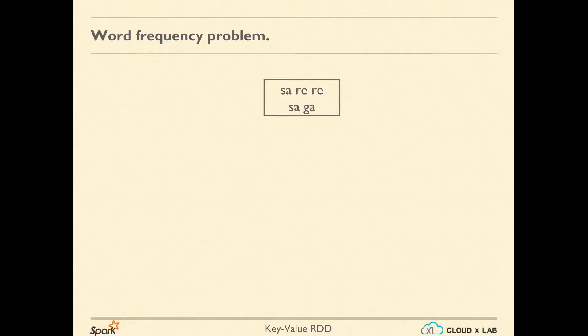Let's take another example. Say we would like to compute the frequencies of words in a huge text file. In other words, the objective is to find unique words in the text and find the frequencies of each of these unique words. If we have a text with two lines containing SA, RE, RE and SA, GA, we should be able to print the number of occurrences of GA as 1, RE as 2, and SA as 2.